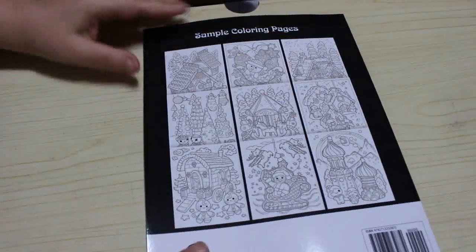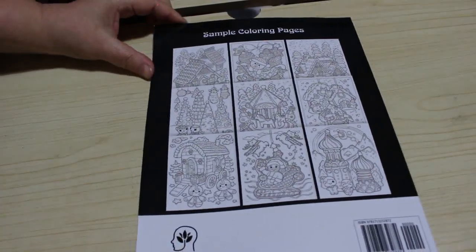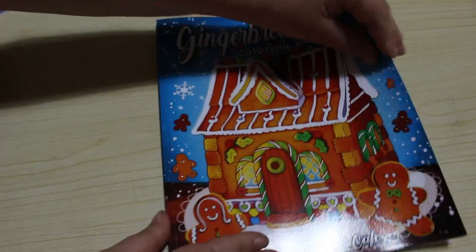So there's the front cover. And on the back you get nine of the images that are inside to get an idea of what you're coloring. So let's have a look.